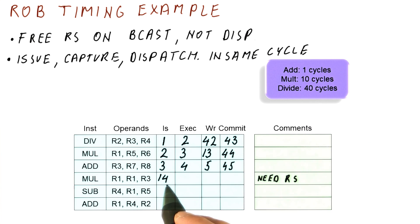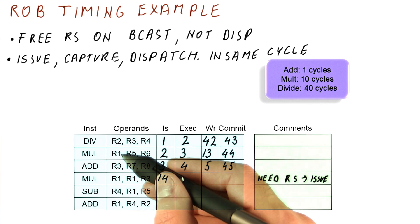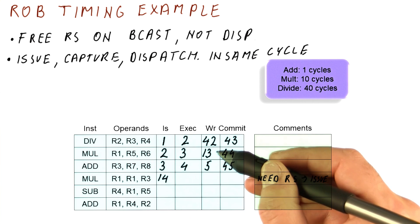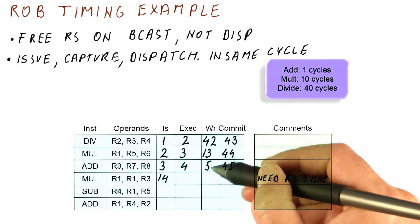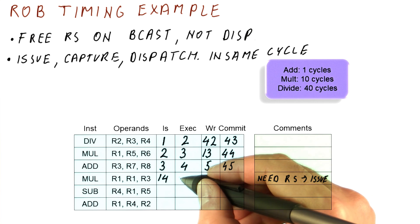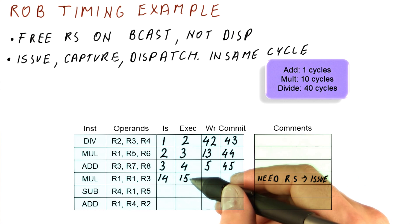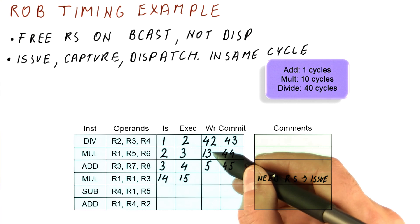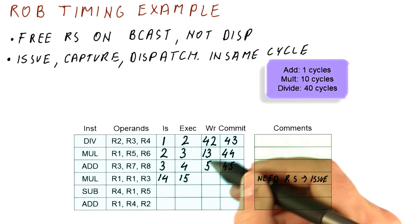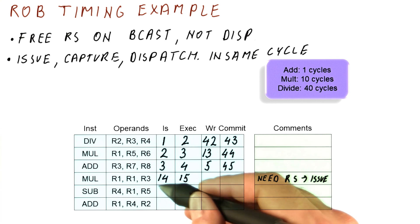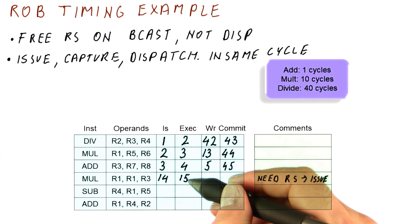So this is just kind of to note that basically we have been delayed in our issue because of the needing the reservation station. We are using results of R1 and R3. So we have to wait for the multiplication and add before we can execute. But those results have been broadcast in cycles 13 and five. So in cycle 15, which is when we can try to execute, we can. If we manage to issue in cycle four, we would still have to wait until cycle 14 here because of cycle 13 here. So pretty much our result would be broadcast in cycle 13. We would be able to dispatch only in 13. We would be executing in 14. Because we also needed to wait for a reservation station, we couldn't issue until cycle 14 so we can only execute in cycle 15.